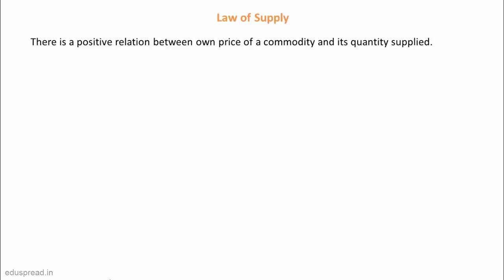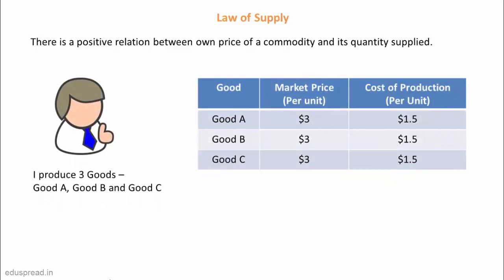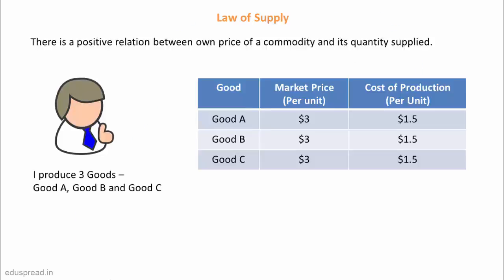When we talk about supply, it's not only the price of the good that determines the quantity supplied by sellers — there are some other factors as well that sellers take into account while deciding how much of a good to supply. For example, cost of production. Imagine a seller producing three goods: Good A, Good B, and Good C. The market price of all these goods is the same, $3 per unit, and the cost of producing these goods is also the same, $1.5 per unit.